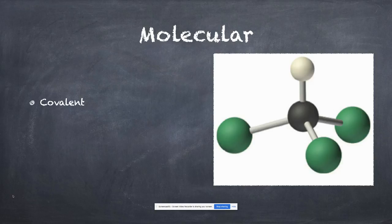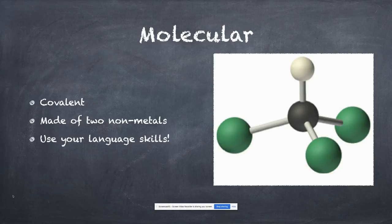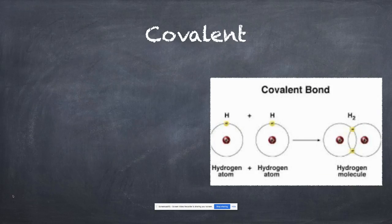Molecular compounds are covalent. They are a molecule. They're composed of non-metals. I've said two non-metals, but it could also be three, four, five, 100, you get the idea. The bonding is going to be covalent, not ionic. When you have things like carbon dioxide, they're molecular. Use your language skills: molecular compounds are made up of molecules.